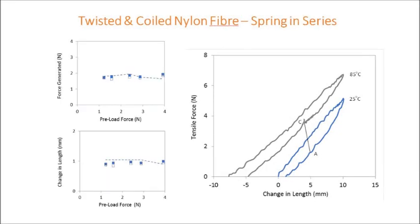When we operate the twisted and coiled nylon fiber against a spring in series, we find good agreement between the measured force generated and change in length — shown as symbols in the left hand figures — and the values estimated using the graphical method, represented by the line A to C in the right hand figure. The slope of that line is the spring stiffness of the external spring, and the transition from A to C enables us to calculate both the change in length and the change in force when the actuators operate against that spring.